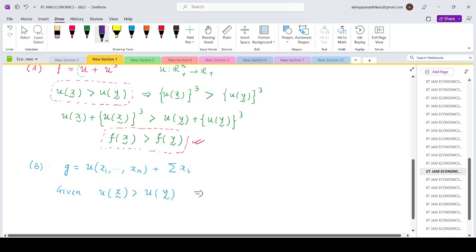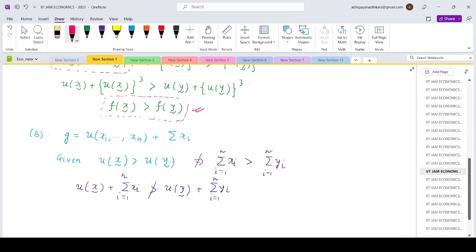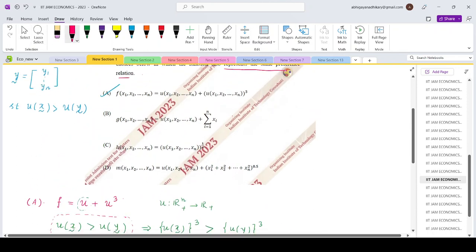But note that this does not imply that summation Xi will be greater than summation Yi. So that means U of X plus summation Xi need not necessarily be greater than U of Y plus summation Yi. So that means G does not represent the same preference. So B is out.